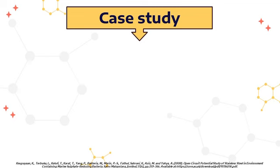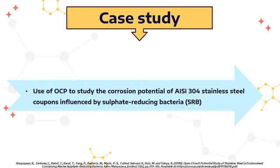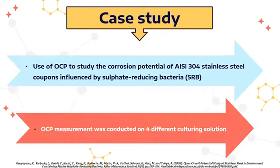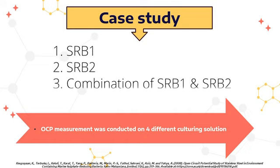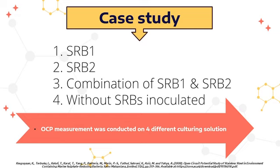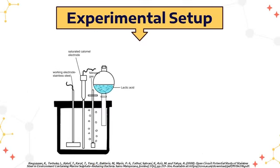Now let's look into our case study: open circuit potential study of stainless steel in an environment containing marine sulfate-reducing bacteria. The corrosion potential of IC-304 stainless steel was influenced by sulfate-reducing bacteria in four different culturing solutions: SRB1, SRB2, a combination of SRB1 and SRB2, and a control without SRBs inoculated.